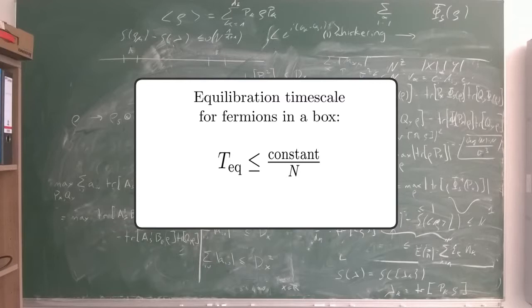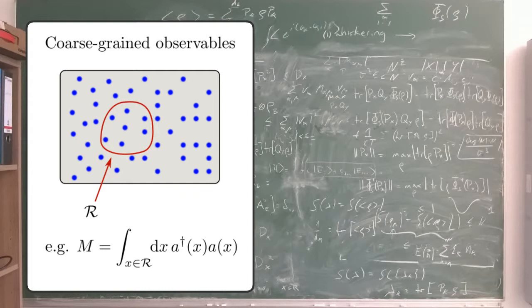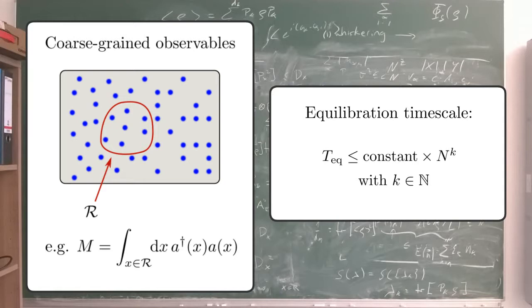Aside from the examples, there are also some more general results. For n-particle systems and coarse-grain measurements, the equilibration timescale is often at most polynomial in n.